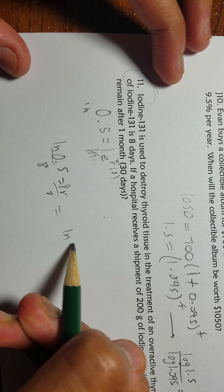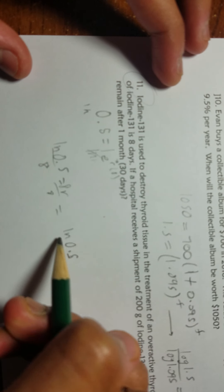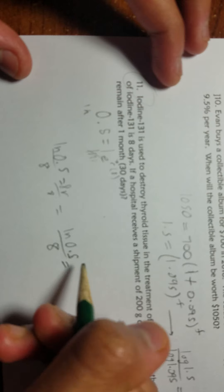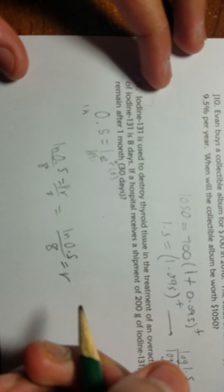ln(0.5) over 8 equals r right here. This right here will tell us the rate.